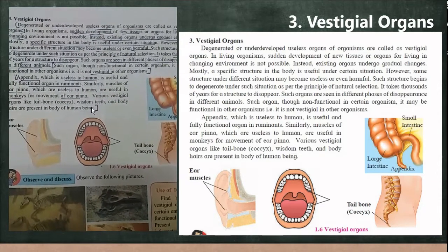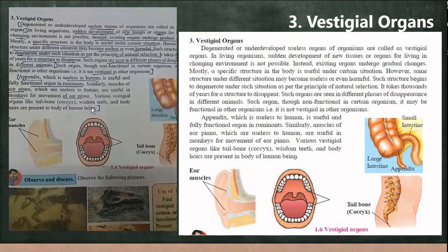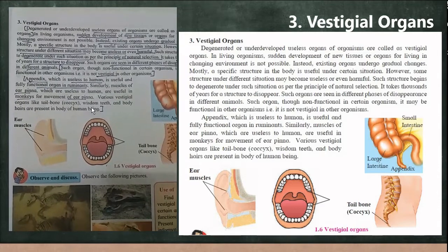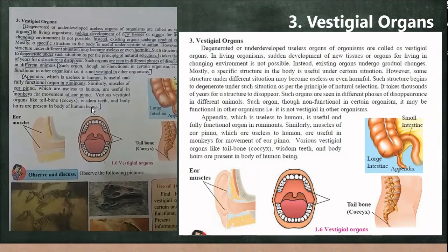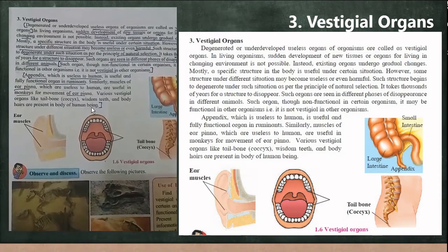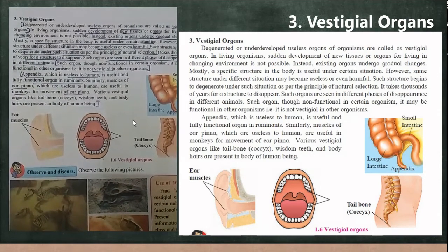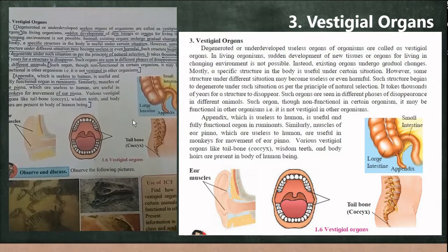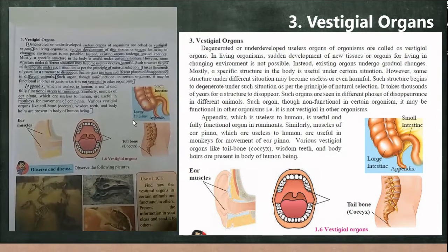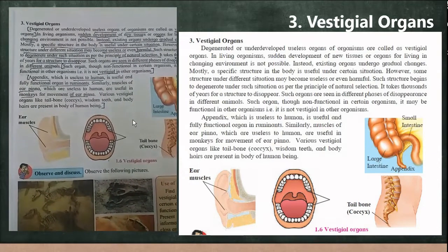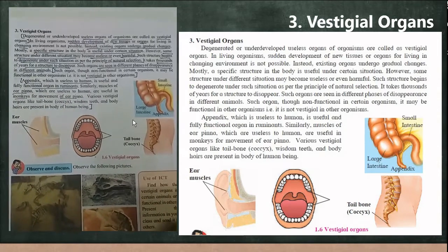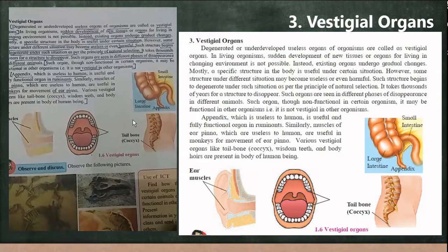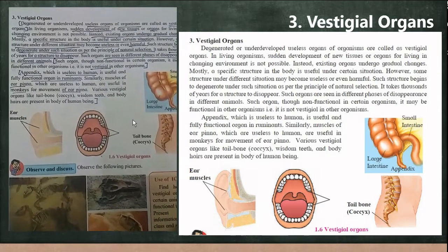The same structure may become useless or even harmful under different situations. Such structures start degenerating — gradually becoming extinct — according to the principle of natural selection, where nature selects species that can adjust to their environment. It requires thousands of years for an organ to disappear. These organs, which are non-functional in certain organisms, may still be functional in others. For example, the appendix is present in human beings.